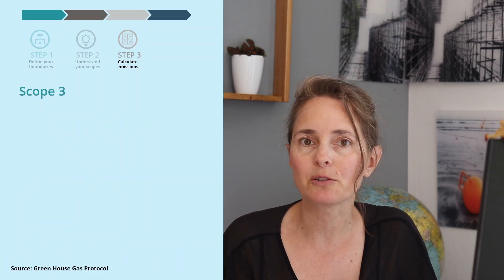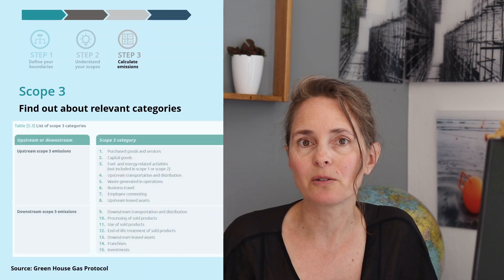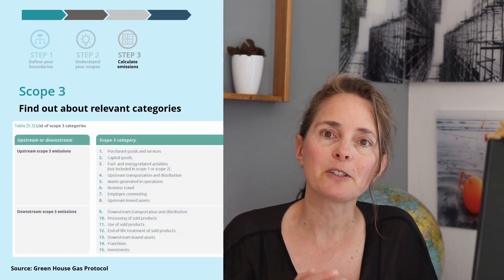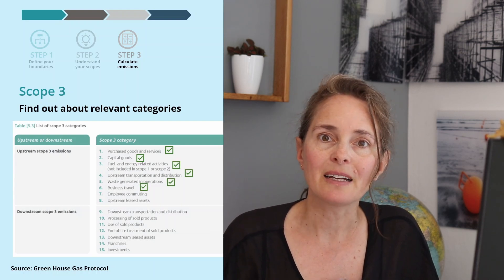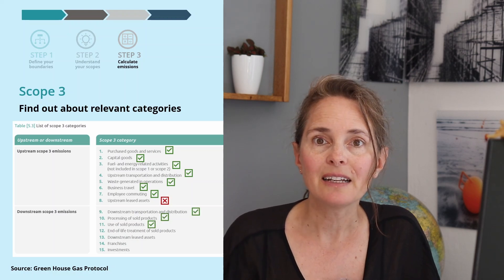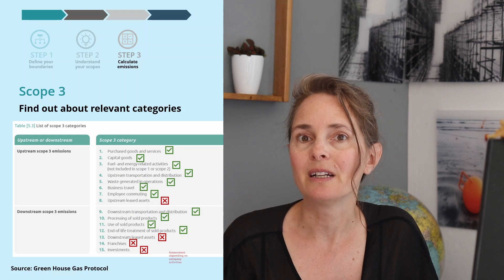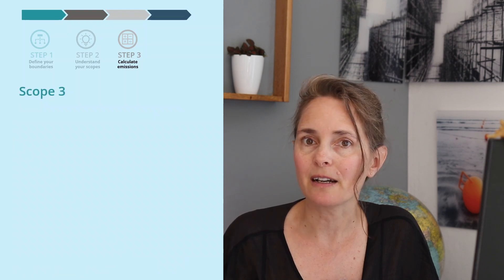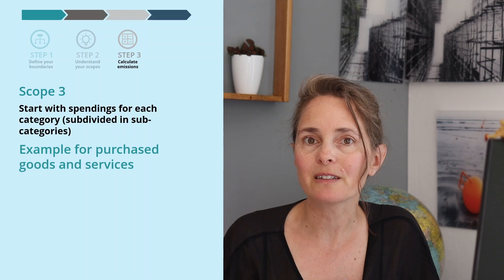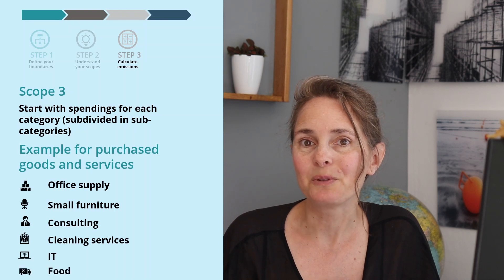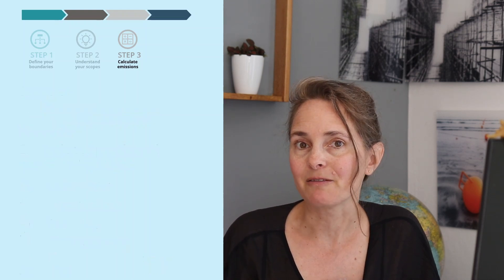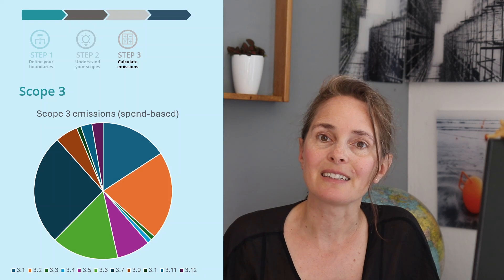For scope three, it's a bit more complicated. I first do an analysis of all the categories that are relevant, going along the greenhouse gas protocol to see which categories apply to the company. Then I collect as much data as I can. I often start with the spendings I have for the different categories, find the emission factors that fit those spendings — the more accurate to the industry, the better — and then make a first overview of which emissions might be my hotspots, so I can dive deeper into those.